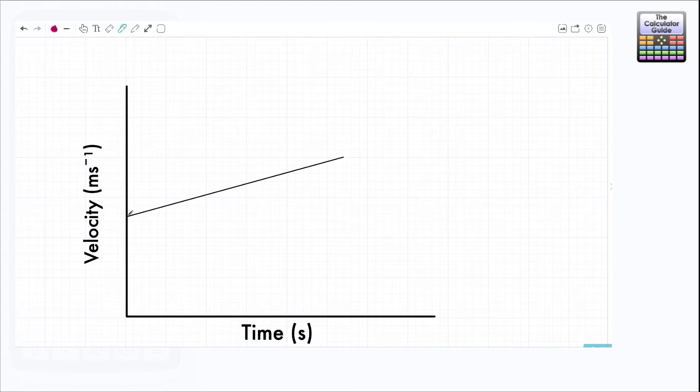I'm going to start by labeling the graph with some letters. The starting velocity or the initial velocity here where it touches the y-axis we're going to label as u. If you remember from the first video that's what we used to represent velocity. The velocity at the end of the time period we're looking at, if I trace that back, this is what I'm going to use the letter v for. So v is actually our final velocity.